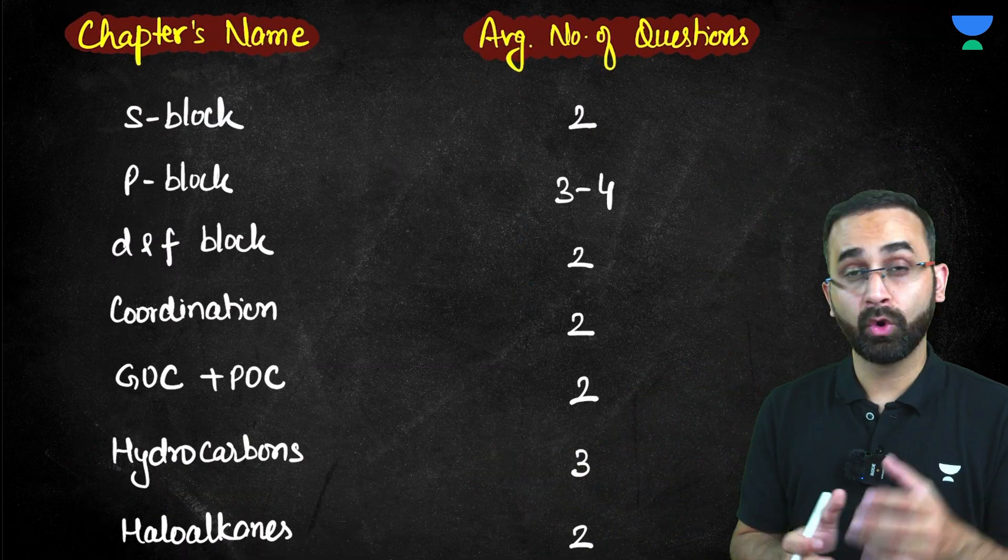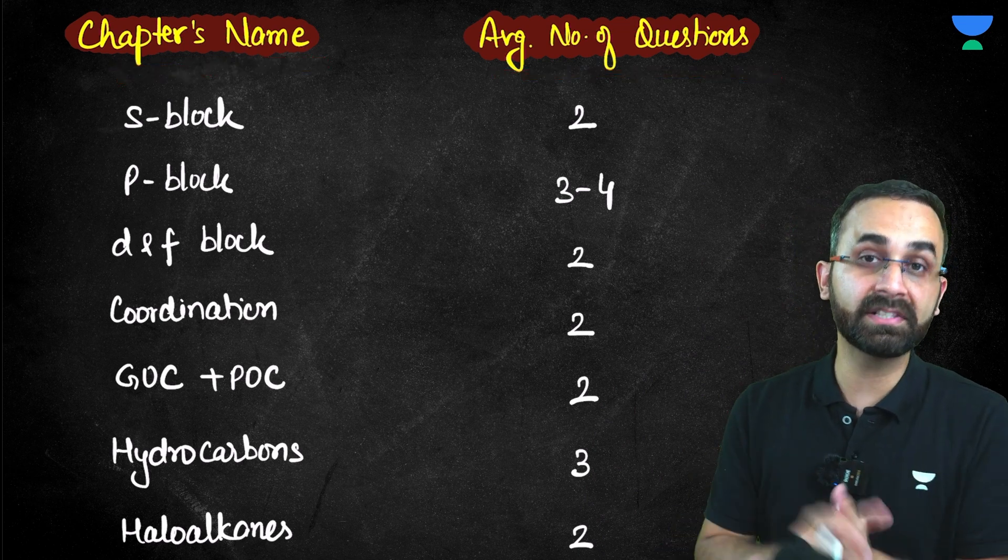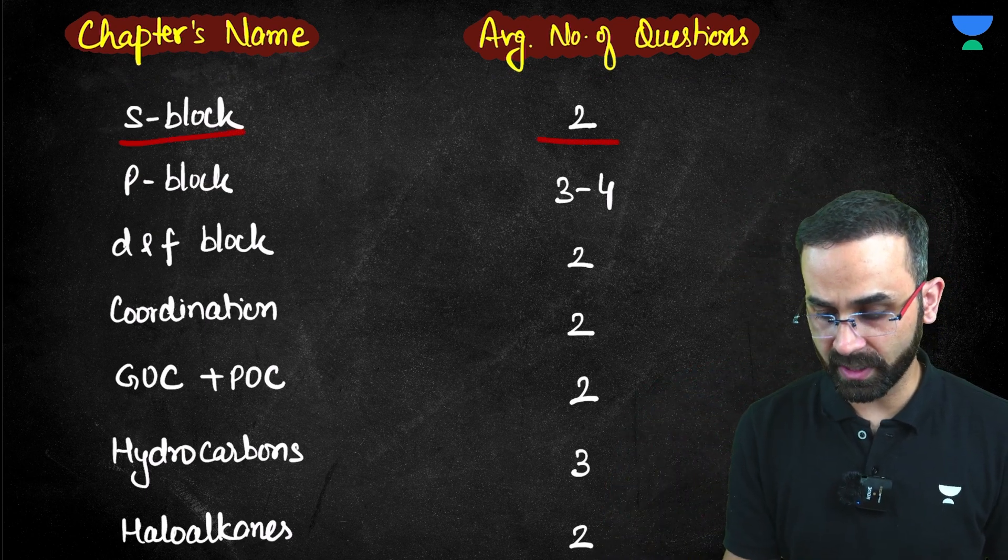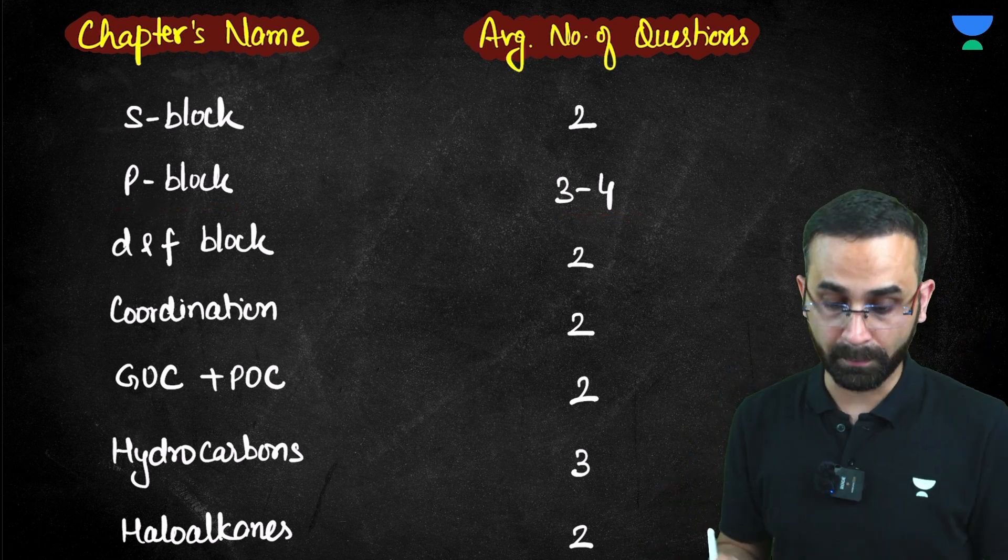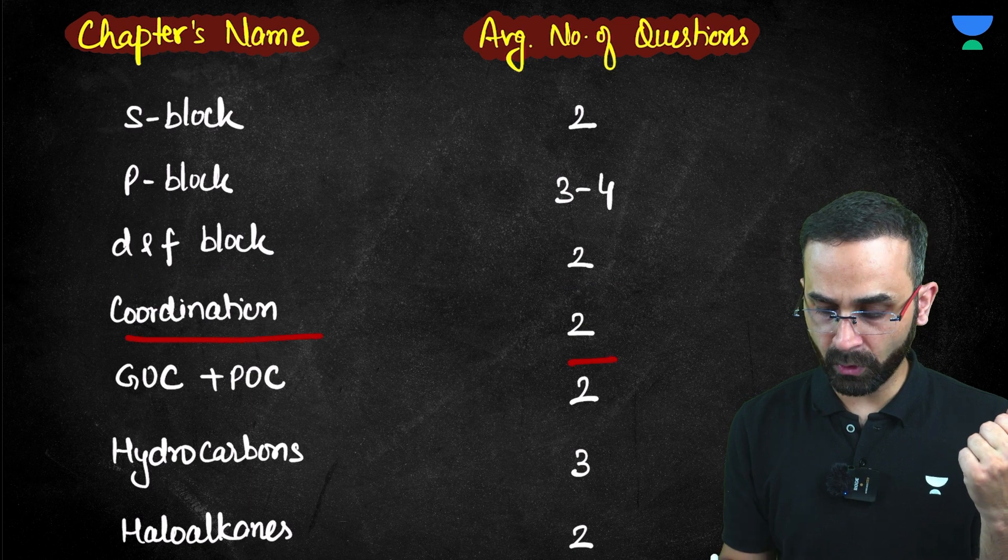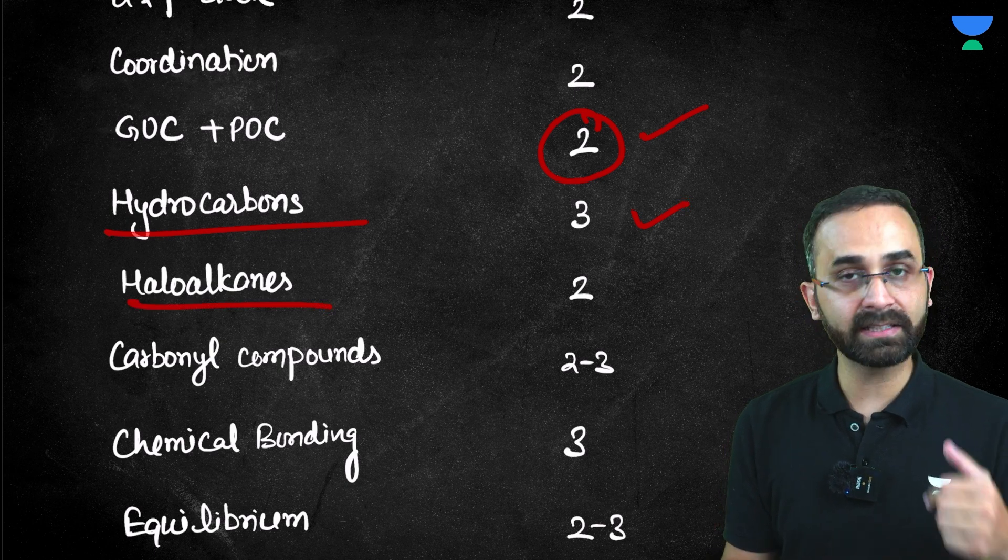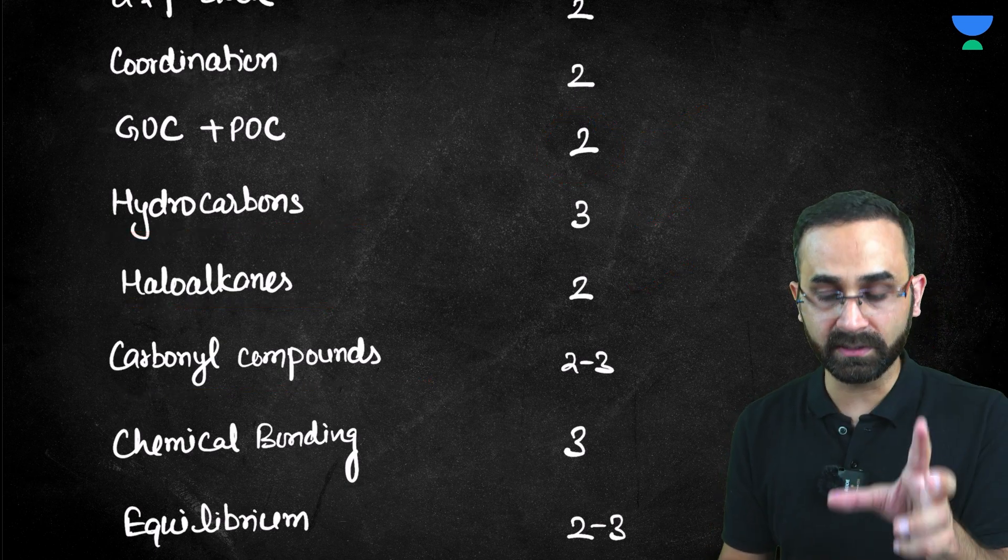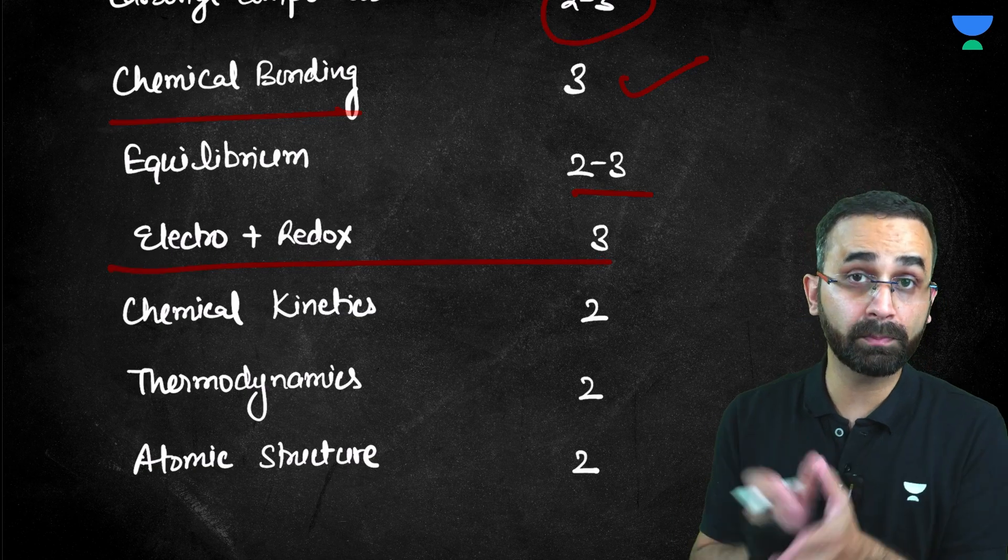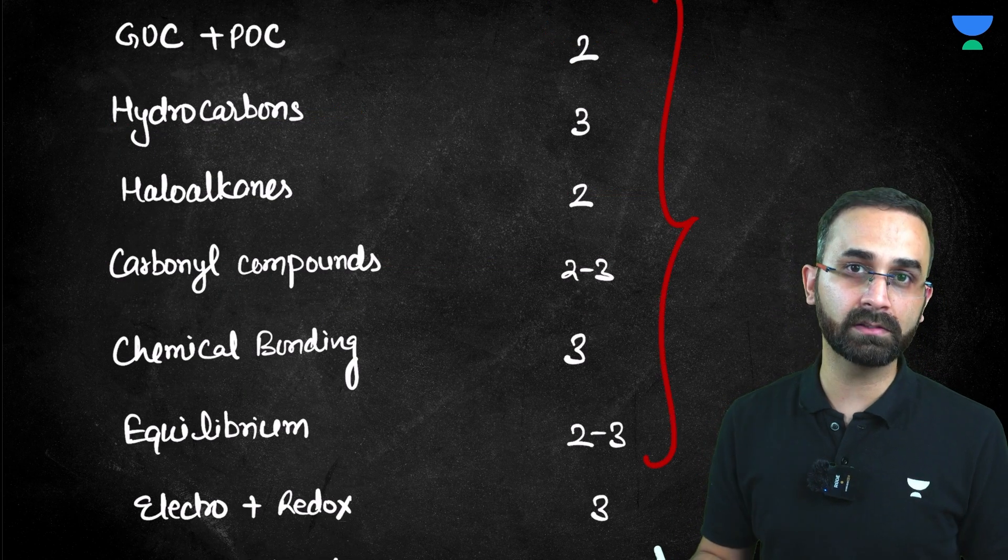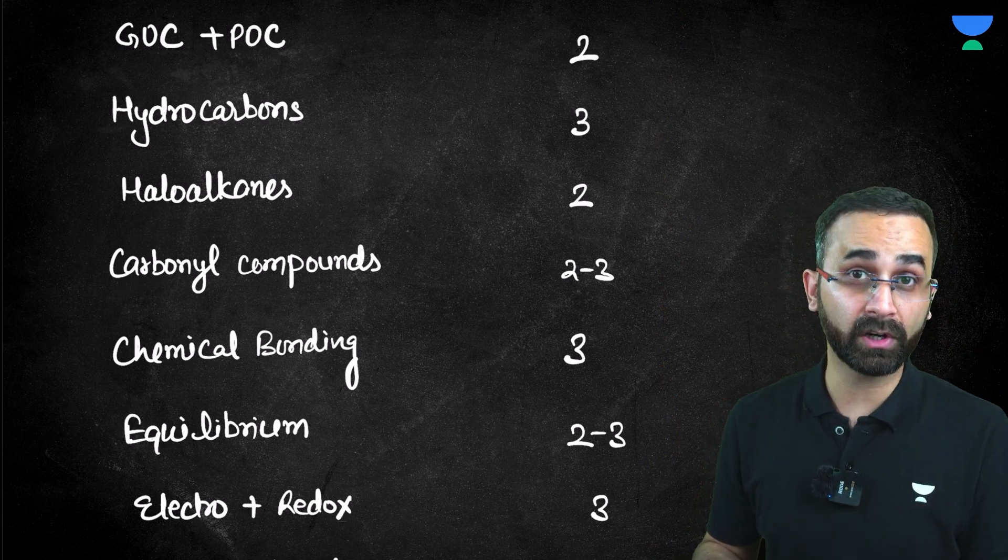Now let's talk about the chapters that can give you more than 4 marks. Here are some top chapters and the average number of questions in recent years NEET examination. S block generally gets 2 questions, P block 3 to 4 (I am talking about the entire P block, 11th and 12th combined), D and F block 2 questions, coordination compounds 2 questions, GOC plus POC combined give you 2 questions, hydrocarbons generally 3 questions, haloalkanes and haloarenes 2 questions, carbonyl compounds and acids 2 to 3 questions, chemical bonding around 3 questions, equilibrium 2 to 3 questions, electrochemistry plus redox. Finishing this chapter will give you a lot of confidence that yes, you are going to score much better than your competition. So do focus on these most important chapters.